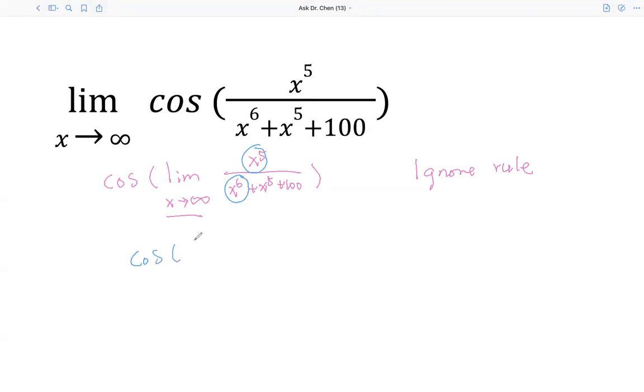We get the cosine of the limit, x approaches infinity. Now I ignore the lower terms. So the numerator I have x raised by 5, the denominator I have x raised by 6. This one can be simplified to be 1 over x.